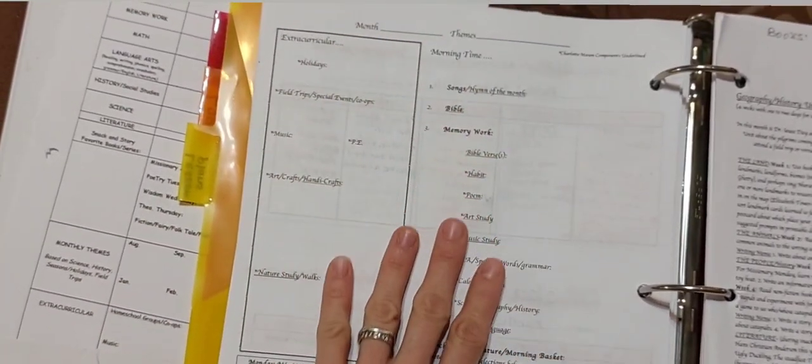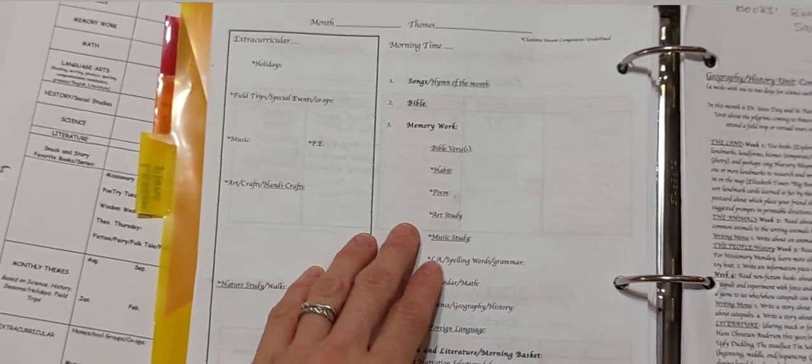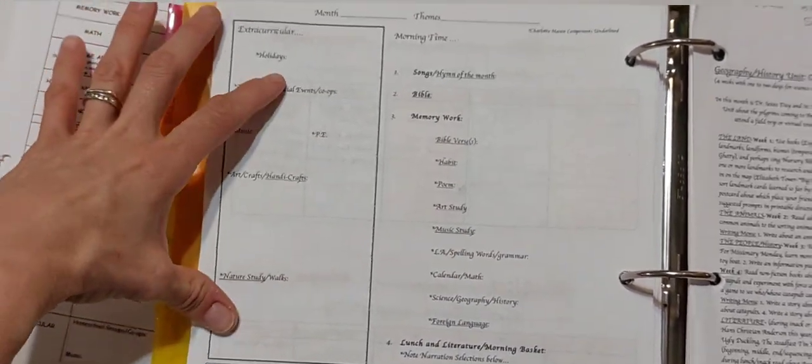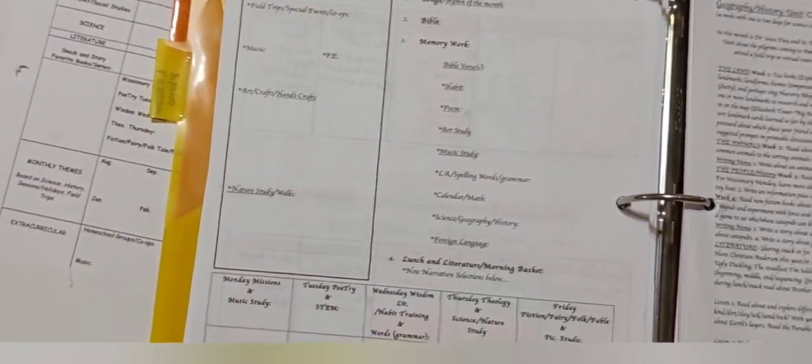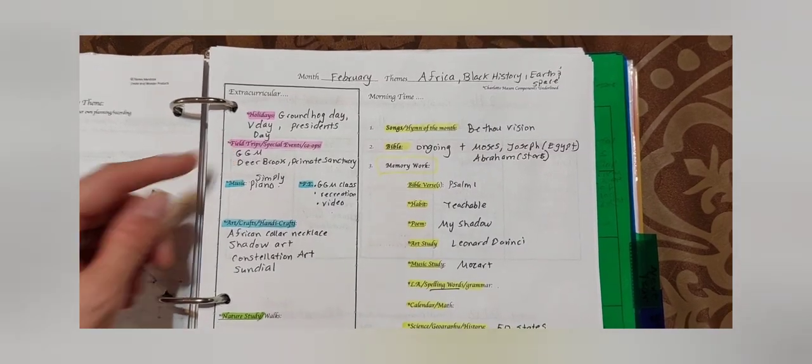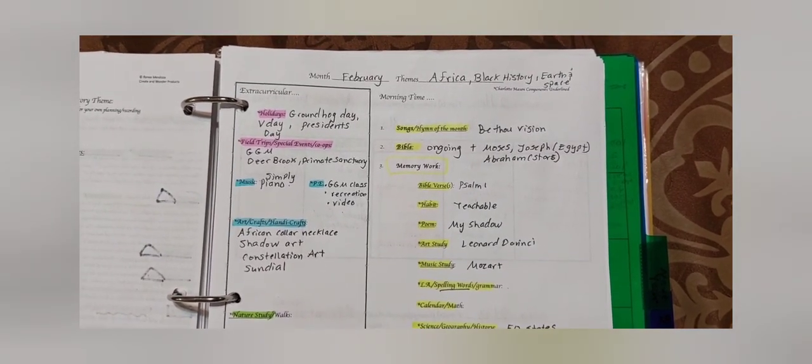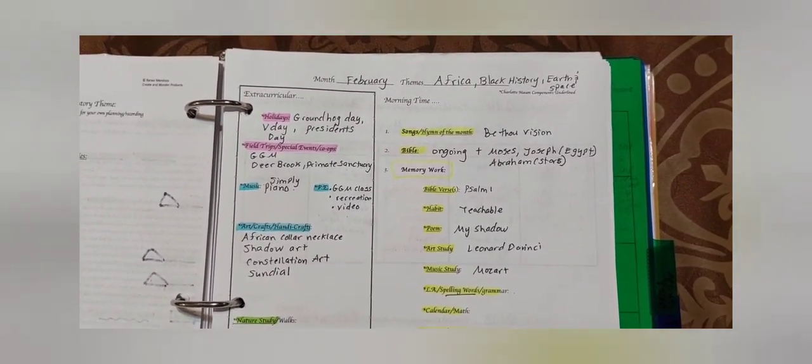So first, we're going to talk about how I plan by the month using this overview sheet for things like extracurricular activities, your morning time and memory work and Charlotte Mason components and your morning basket. Right here it is filled in. I did pink for people, meaning holidays, field trips, special events, and co-ops where we see people.